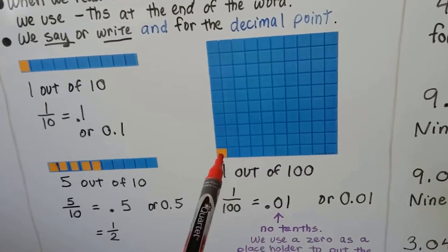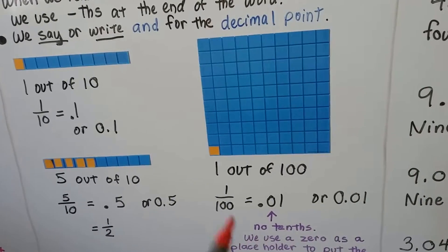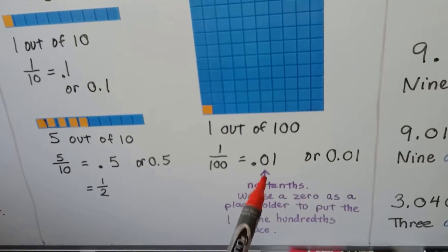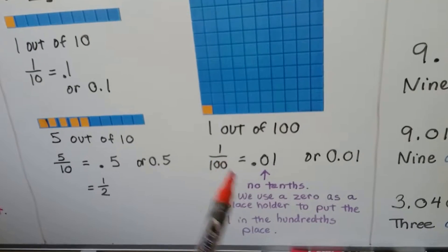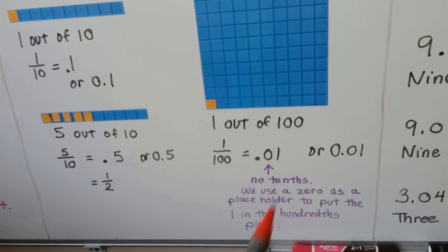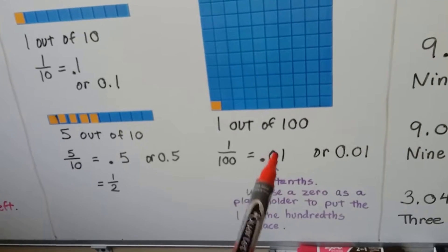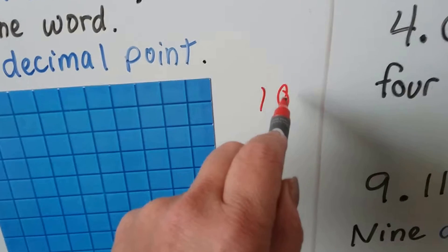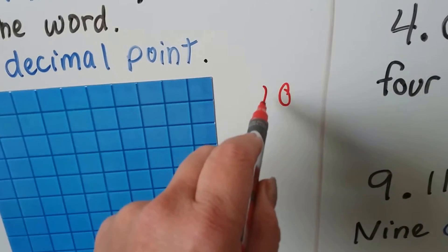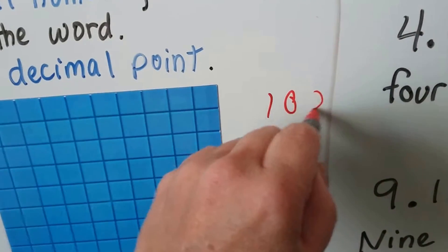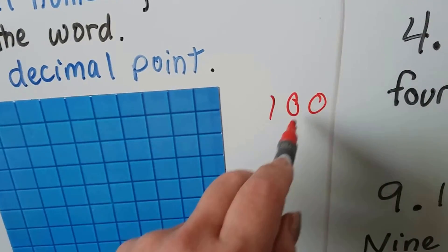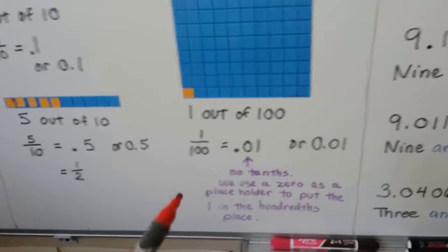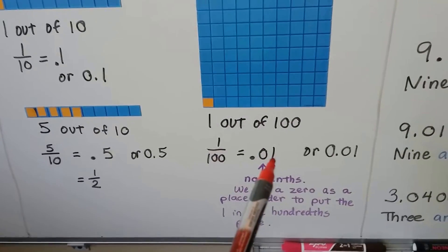Now we have a hundred squares and one out of these hundred is orange — one one-hundredth is orange. We write point zero one, because there's no tenths, there's only one hundredth. We use a zero as a placeholder to put the one into the hundredths place. Just like with a whole number ten — there's no ones, but we put a zero there so we know that the one is in the tens place. Or with one hundred, we put zeros in the ones and tens places so we know there's a one in the hundreds place. It's the same thing with decimals, except going in that direction — if there's no tenths, we put a zero there to show it's hundredths.